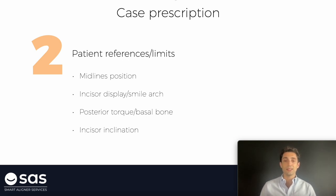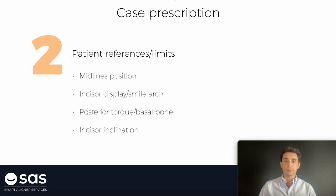When we ask the technician for changes of incisor inclination, we should not write the instructions related with the lateral x-rays. We should not write, for example, finish with 90 degrees of inclination of lower incisors respecting their basal bone — that is not the proper way to write it. We could write: please procline them one millimeter or retrocline them two millimeters. With numbers, it's easier for them to modify or to finish in a proper way.